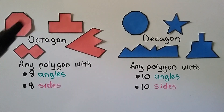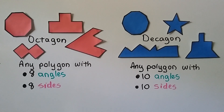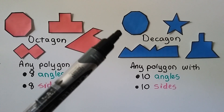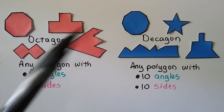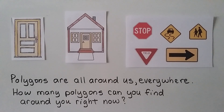These are all octagons — any polygon with eight angles and eight sides is an octagon. It doesn't have to be a regular shape; it could look like this or like this. These are all decagons — they may look like circles, but they have little line segments with sharp corners going all the way around, giving them ten angles and ten sides. Polygons are all around us — how many can you find right now?